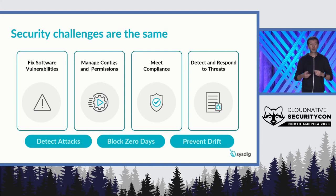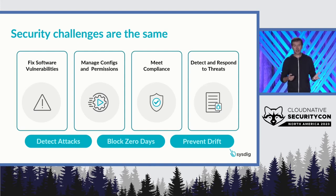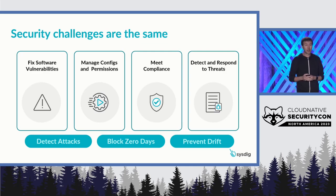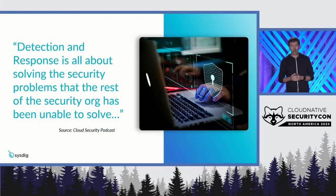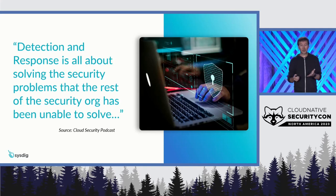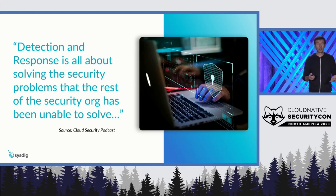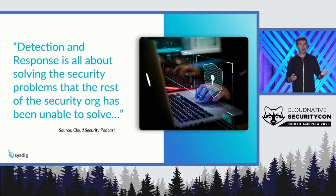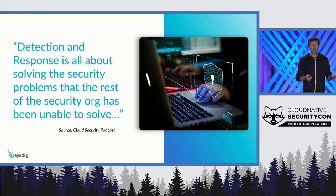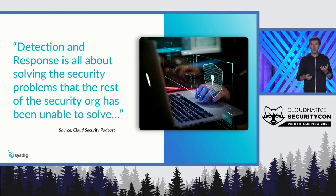I'm here to argue a little bit for the shift to the right and the fact that it's equally important. In particular, runtime security is key to detect attacks, block zero-day events, prevent drift, and many other things. I like this quote from the Cloud Security Podcast: 'Detection and response is all about solving the security problems that the rest of the security organization has been unable to solve.' You can have fantastic supply chain security, great vulnerability management, but in the end the bugs stop where your applications are running in your production environment. Without great visibility, without granular ability to see what's happening, you have a big gap.